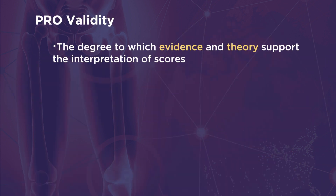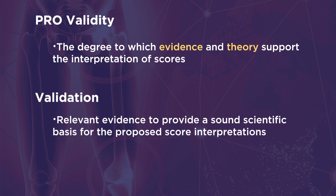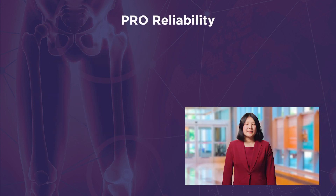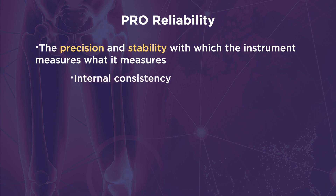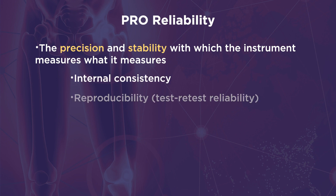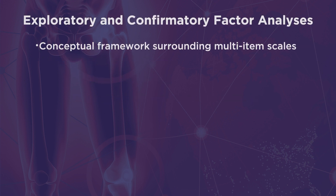Validity refers to the degree to which evidence and theory support the interpretation of scores for proposed uses. Validation involves accumulating relevant evidence to provide a sound scientific basis for the proposed score interpretations. The evidence includes those based on content, response processes, internal structure, and relations to other variables. Reliability assesses precision and stability with which the instrument measures what it measures. It is often assessed in terms of internal consistency, such as Cronbach's Alpha. Reproducibility or test-retest reliability gets at the idea that the scores of patients in stable condition should be constant over time.